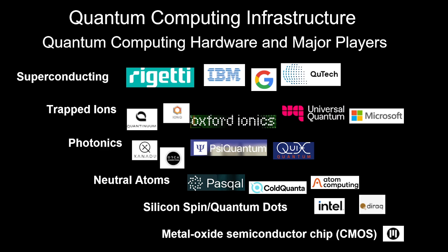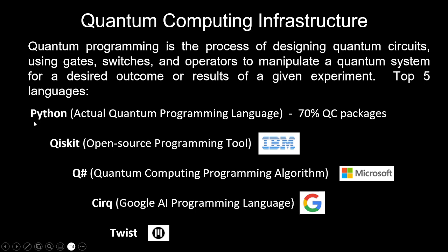Let's talk about the types of experimental hardware for quantum computing. The top languages for quantum computing are Cirq, QISKIT, and TWIST, which are all based on Python. Additionally, QSharp is another language utilized. These companies are all part of the ongoing quantum revolution, which developed one of these three systems. Quantum programming is the process of designing quantum circuits using gates, switches, and operators to manipulate a quantum system for a desired outcome or results of a given experiment.